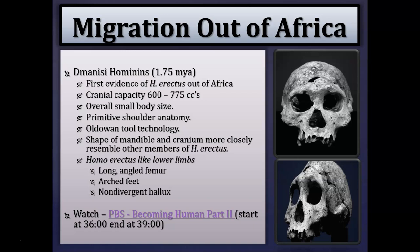The first fossil hominins we see out of Africa are the Dmanisi hominins, dating to about 1.75 million years ago. These are sometimes considered primitive examples of Homo erectus, though some paleoanthropologists give them their own genus and species. Cranial capacity is about 600 to 775 cc's — slightly lower than typical Homo erectus but larger than Homo habilis. Post-cranial anatomy is relatively small, shoulder anatomy is more primitive, and stone tool technology is less sophisticated — more Oldowan type tools.